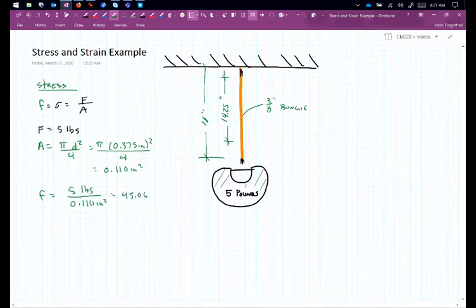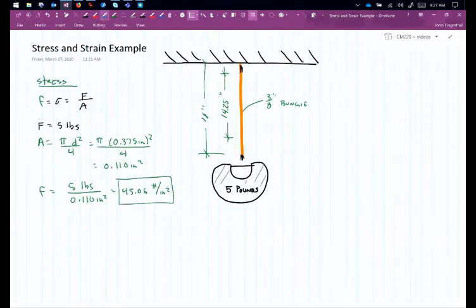So the stress in this bungee is 45.06 pounds per inch squared. The other question is, what is the strain in the bungee? Again, strain is defined as the change in length over the original length. So we get our strain.